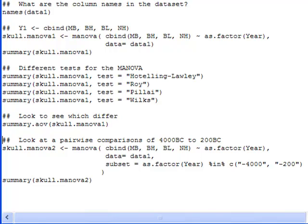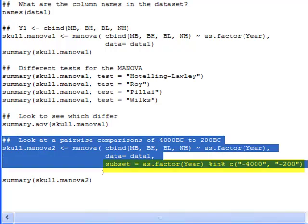So here the statement is the same as before. Here I call it skull.manova2 as opposed to one. But I add another line here called subset. And here I'm saying as my Year, which I have as factor, is in 4000 and negative 200. So 4000 BC, 200 BC. It's going to compare those two. And it's just going to run it on that subset of the data. And then I'm going to just run a summary on it and see what happens.